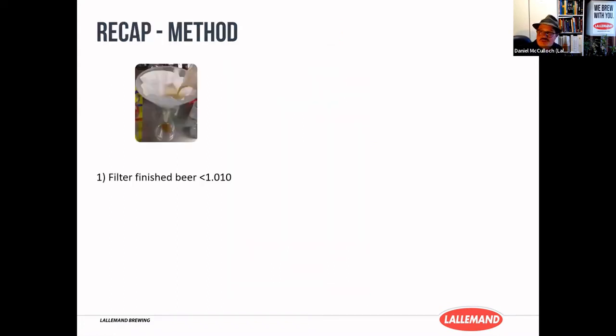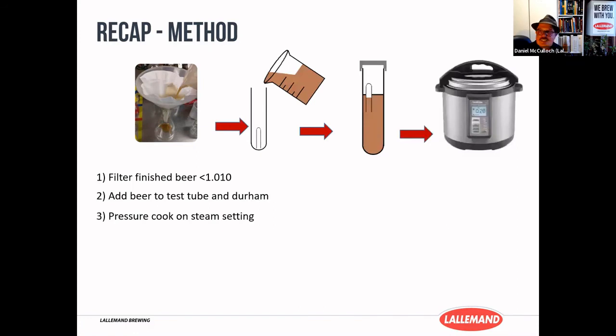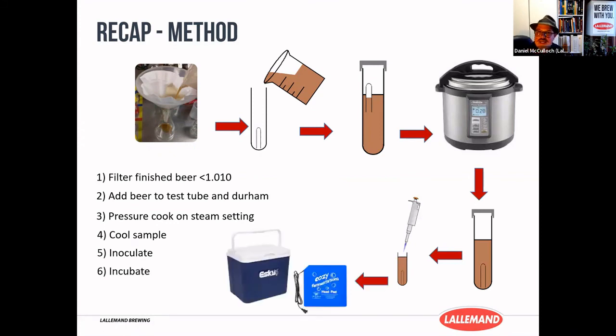Just to recap on this really simple method: filtered beer that is finished fermenting, around 1010. So we know most of those maltotriose and maltotetraose sugars have been consumed. We pour that in, the tube will float. Once we put it into the pressure cooker on the steam setting for about 21 minutes, that will sink and also autoclave the beer so that there's nothing else in there, just the beer. Ready for the test, we inoculate, and then you want to incubate to make that reaction faster of what's happening.